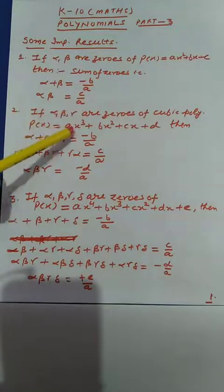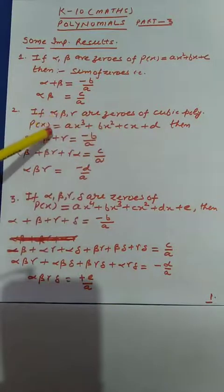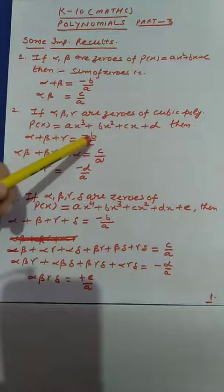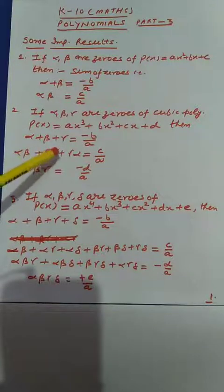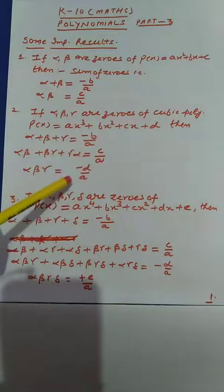Similarly, if I have the cubic polynomial ax³ plus bx² plus cx plus d, then there will be three zeros and I will get three results. These are: alpha plus beta plus gamma equal to minus b upon a. Sum of product of zeros taken two at a time is equal to c divided by a. And product of the zeros is minus d divided by a.